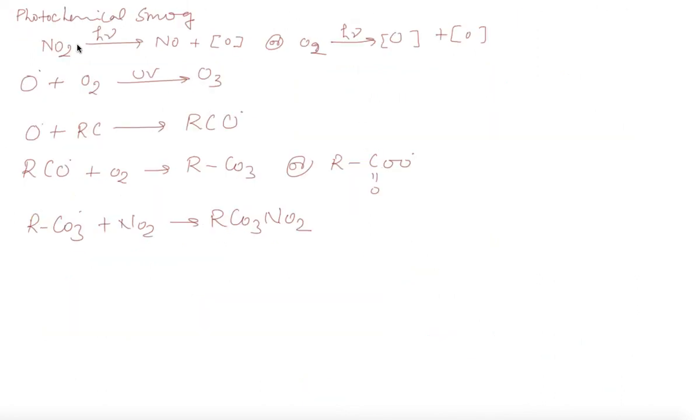Now NO2 in sunlight breaks down, gives you NO and nascent oxygen, or O2 breaks down gives you O and O nascent oxygen. This O reacts with O2 in UV light forms the O3. This O reacts with RCHO, that is hydrocarbon, gives you RCO acyl radicals. Acyl radical reacts with O2 gives you peroxyacyl radical.